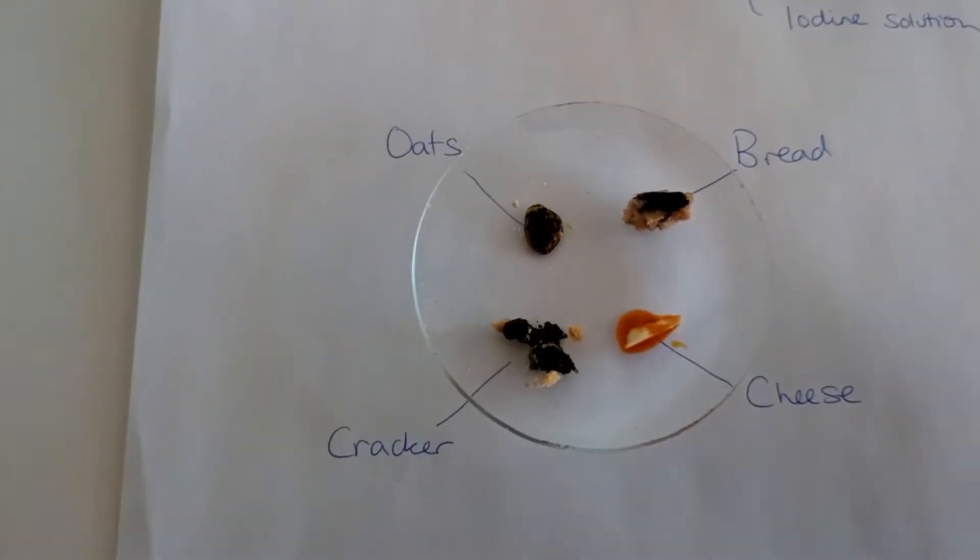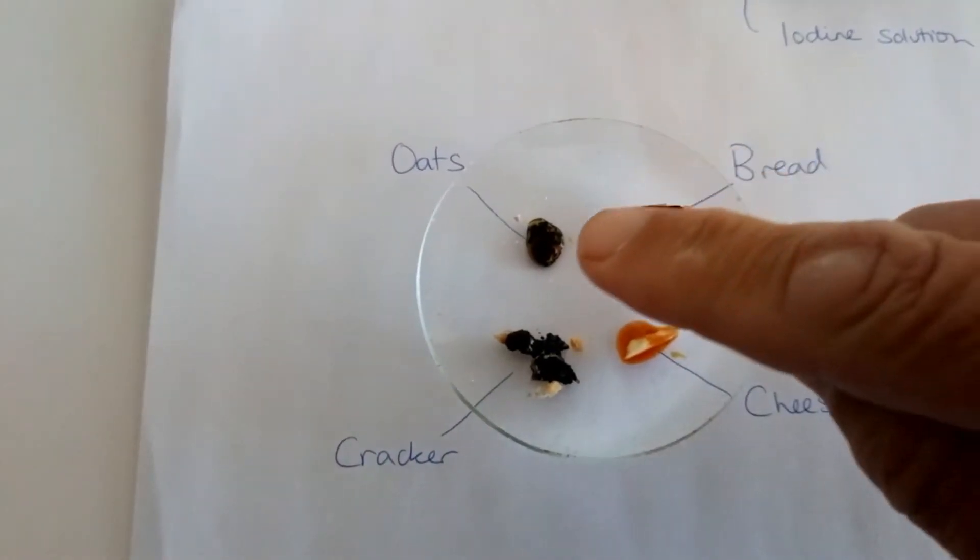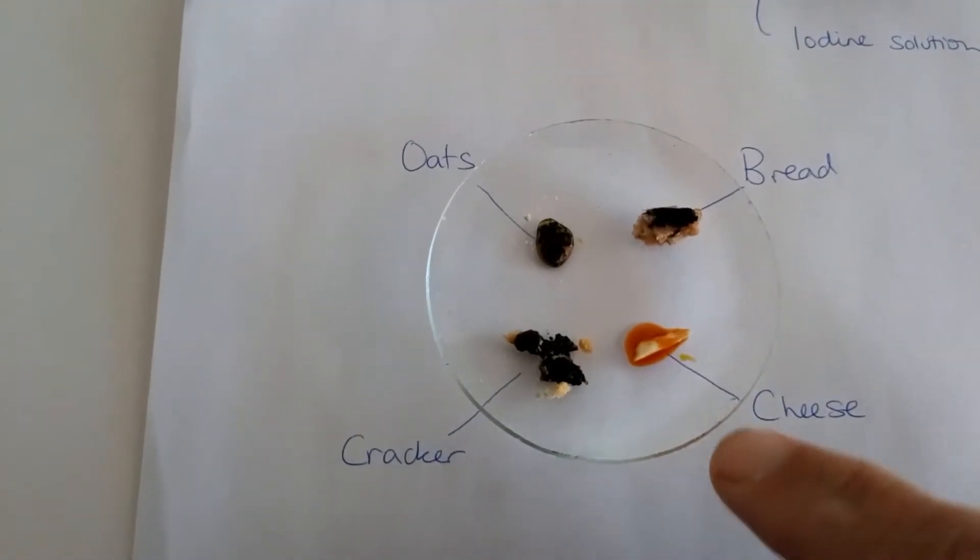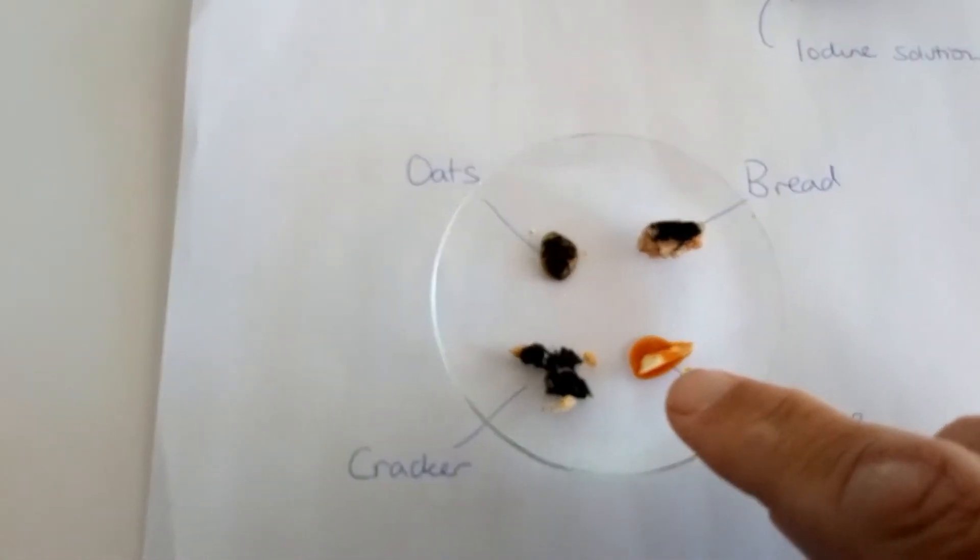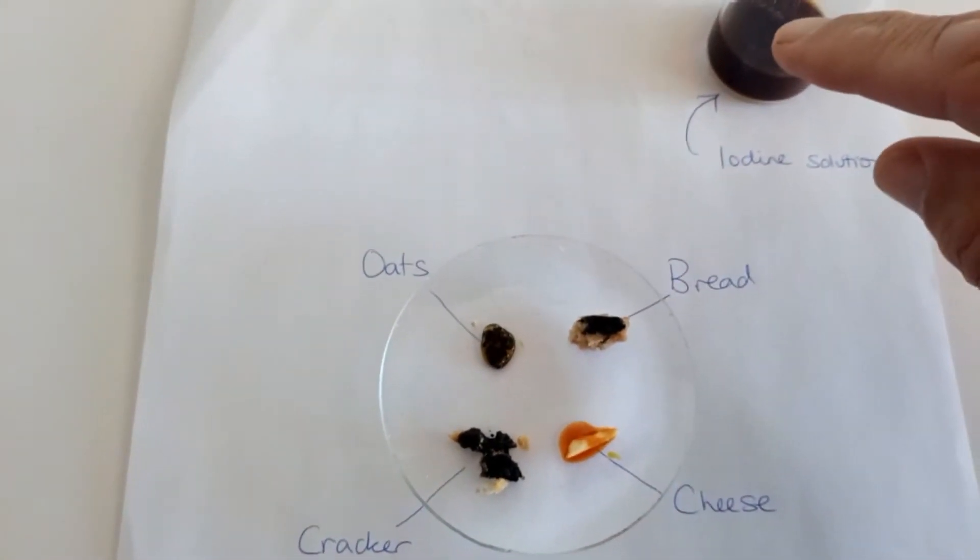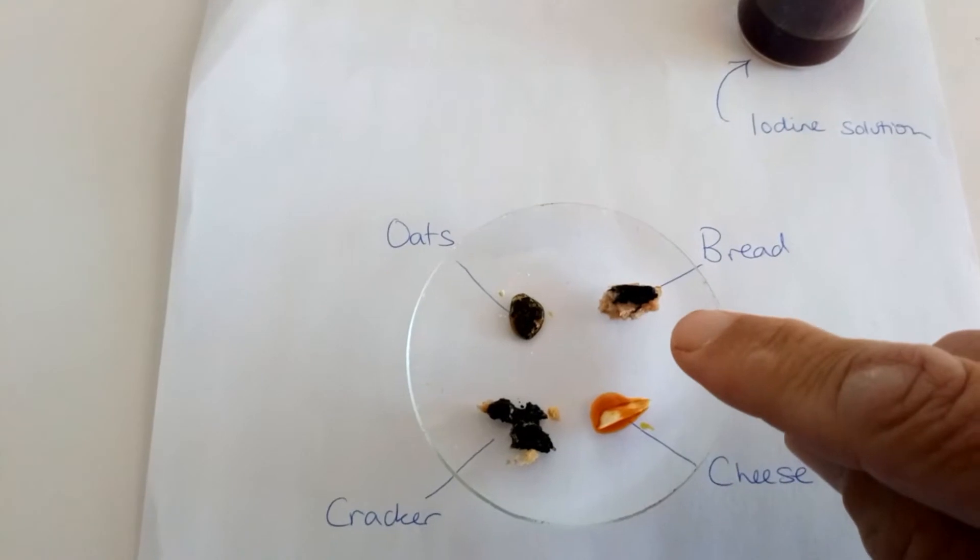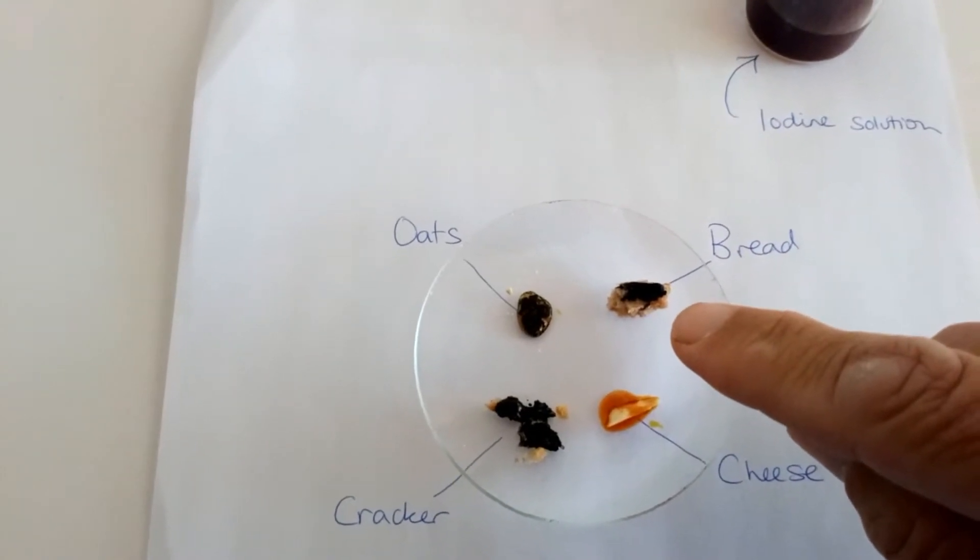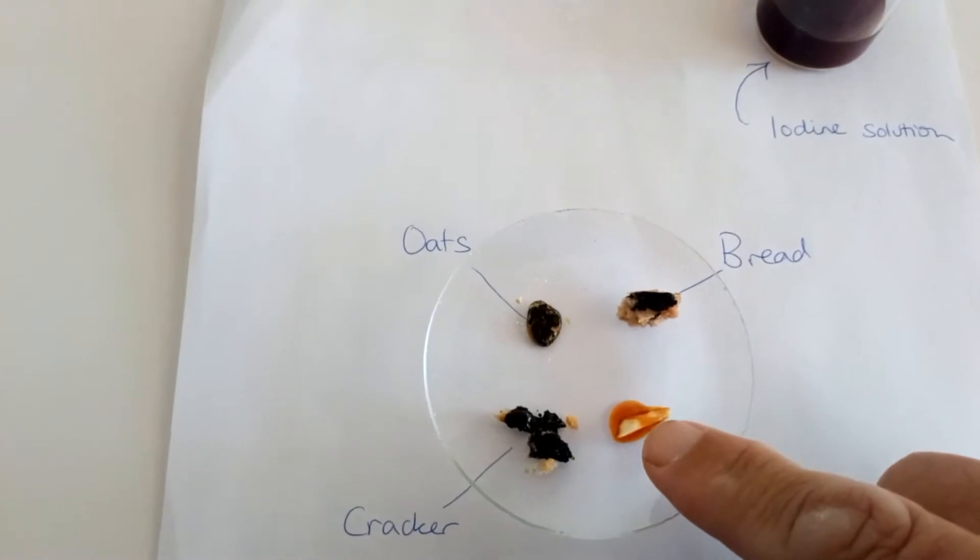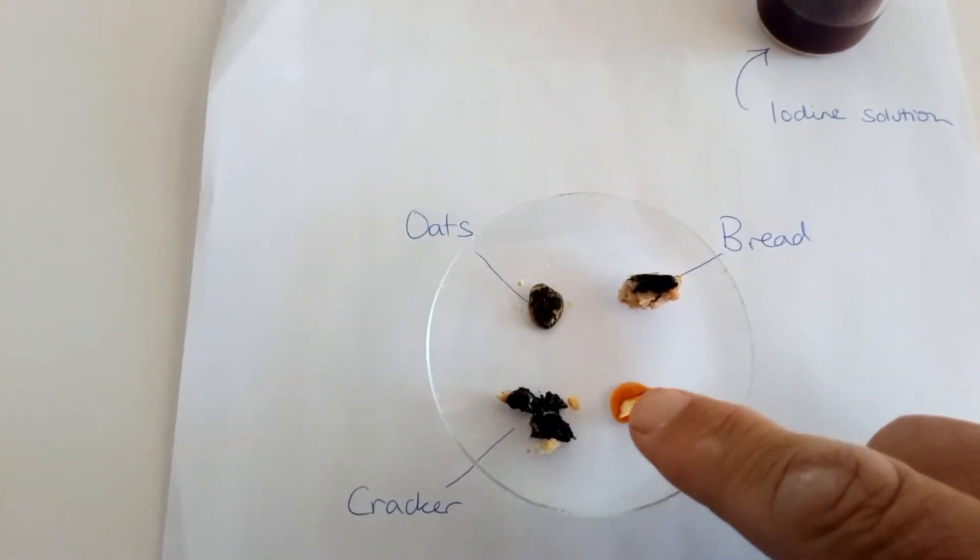And that would indicate to us that the bread, the oats and the cracker all contain starch, and the cheese does not contain starch. So iodine with starch goes a blue black color. Iodine without starch remains an orange brown color.